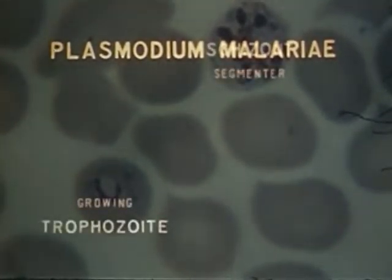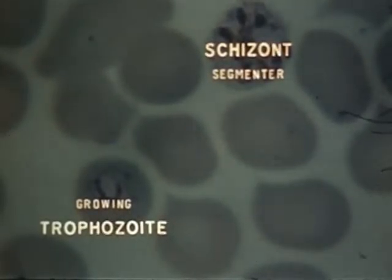Plasmodium malariae, which causes quartan malaria, requires three days for its asexual cycle, as compared with two days in vivax and falciparum.